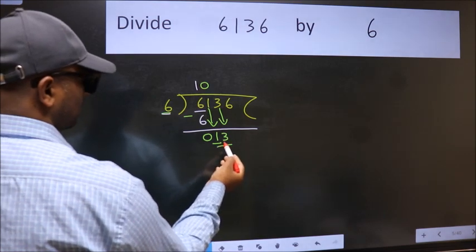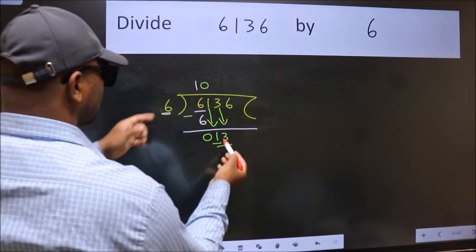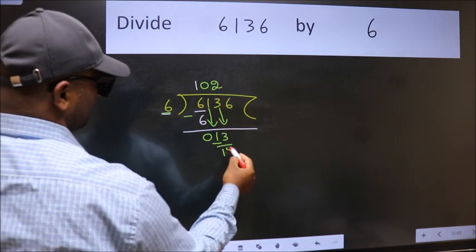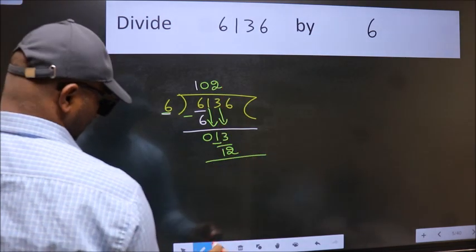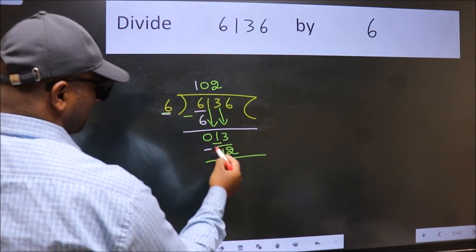So 13. A number close to 13 in 6 table is 6, 2, 12. Now we subtract. We get 1.